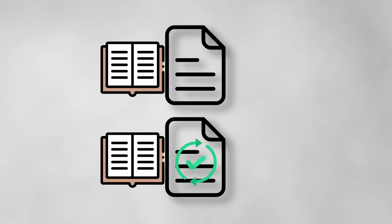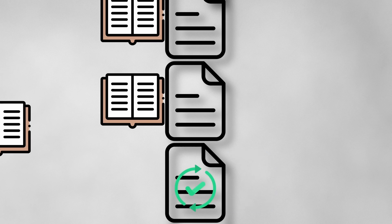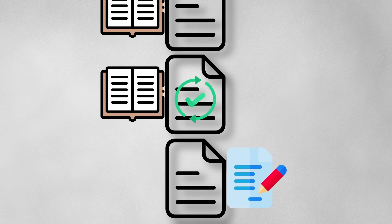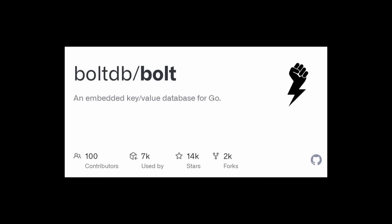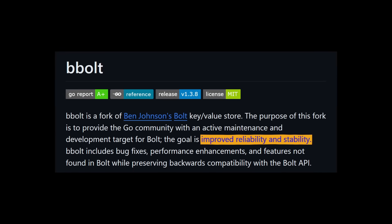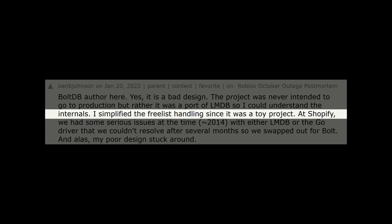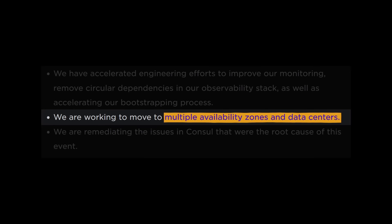Given this wasn't an issue before, it's probable that Consul's streaming feature used more long-lived reads than polling, which quickly grew the free list to a size that started impacting performance. The short-term fix was to compact the database — writing all the existing data into a new database environment with no readers and therefore no shadow copying, then tossing the old bloated files. Long-term, they upgraded from BoltDB to BBolt, which was a better implementation that offered improved reliability and stability, and unlike BoltDB, wasn't a single person's toy project for learning how LMDB internals worked.